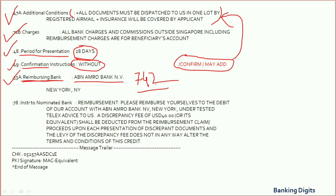Field 78 refers to the payment instruction given by the issuing bank to the presenting bank — how the presenting bank will get the payment, whether the issuing bank will directly remit the funds or if the presenting bank needs to claim from the reimbursing bank.